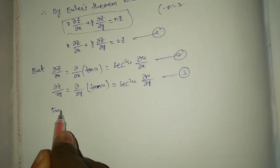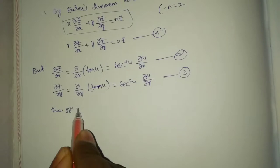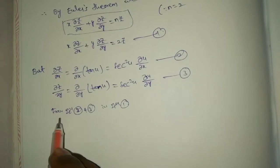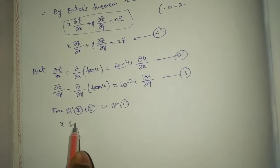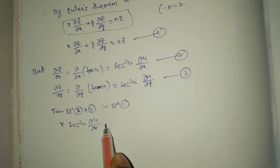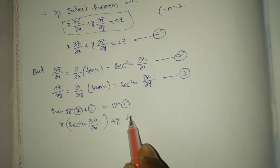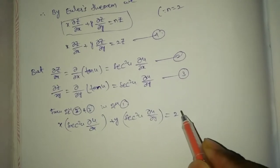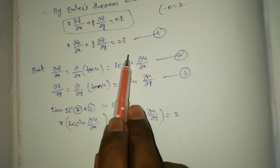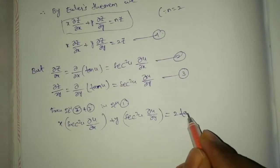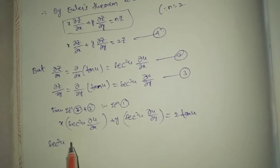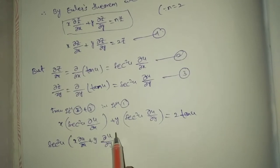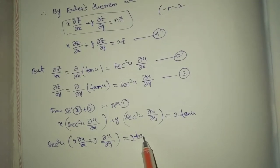From equation number 2 and 3 in equation 1. x secant square u del u by del x plus y secant square u del u by del y equal 2 tan u. Secant square u common here, x del u by del x plus y del u by del y equal 2 tan u.